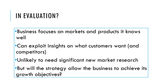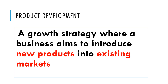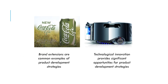Our next strategy is product development — where the business tries to grow by developing a new product and selling it in a market they already operate in. A common example is where a company extends its brand: Coca-Cola might release Coca-Cola Life or Coca-Cola Green — a new product designed to target existing customers. Similarly, Dyson might develop a new product and sell it to existing customers in an existing market.